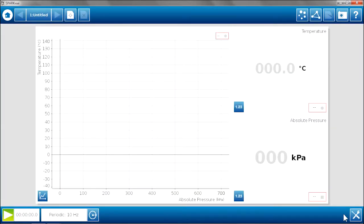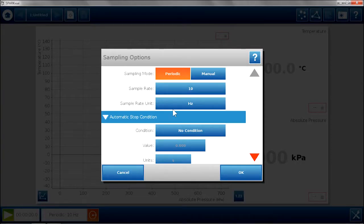So now I am almost ready to start collecting data. I want to do this in manual sampling mode. I want to make sure my values are stable before I collect a point. So I am going to change the sampling option to manual. Now I am ready to start collecting data.